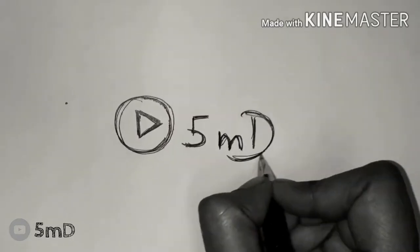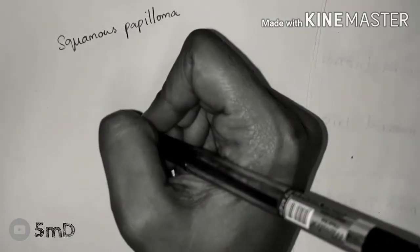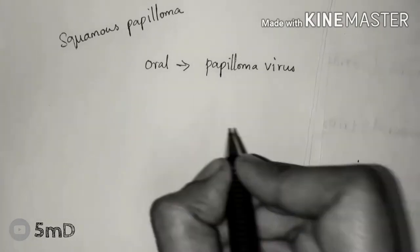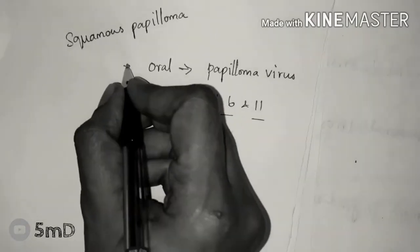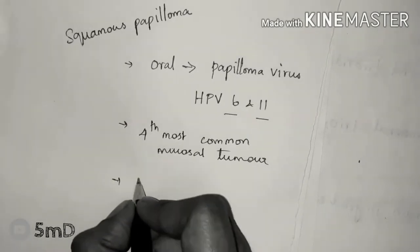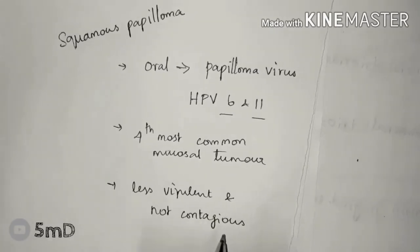Squamous papilloma is associated with the human papilloma virus 6 and 11. Papilloma virus is commonly marked as the etiological factor in skin warts, but the number differs between oral and skin warts. It is the fourth most common mucosal tumor. HPV is infective but papilloma is less virulent and not contagious.